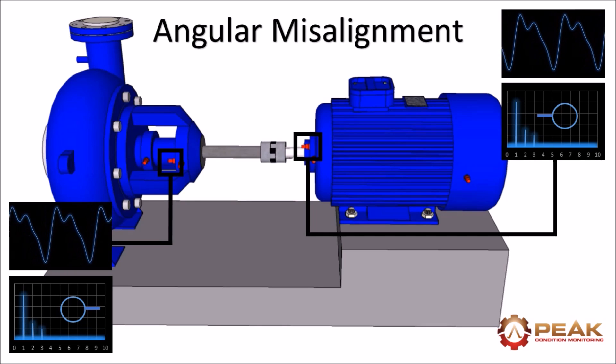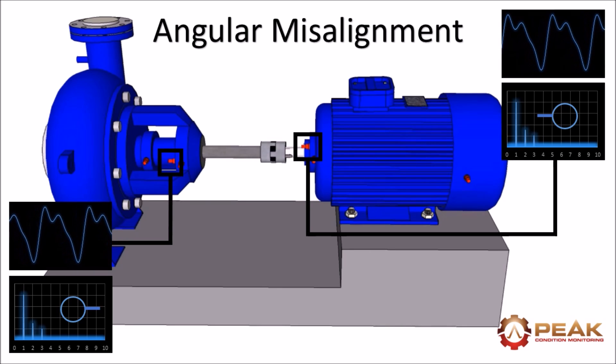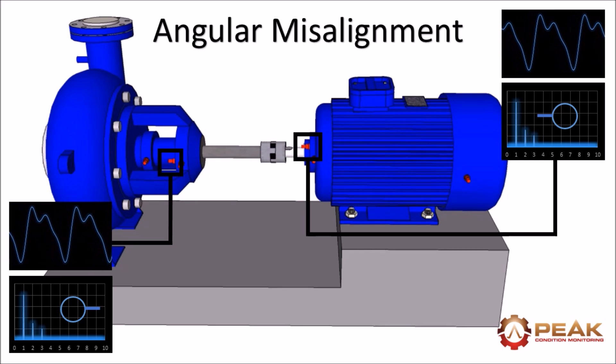If angular misalignment is present you'll again see the 1x, 2x and 3x peaks but in the radial direction and again the waveforms will be out of phase.